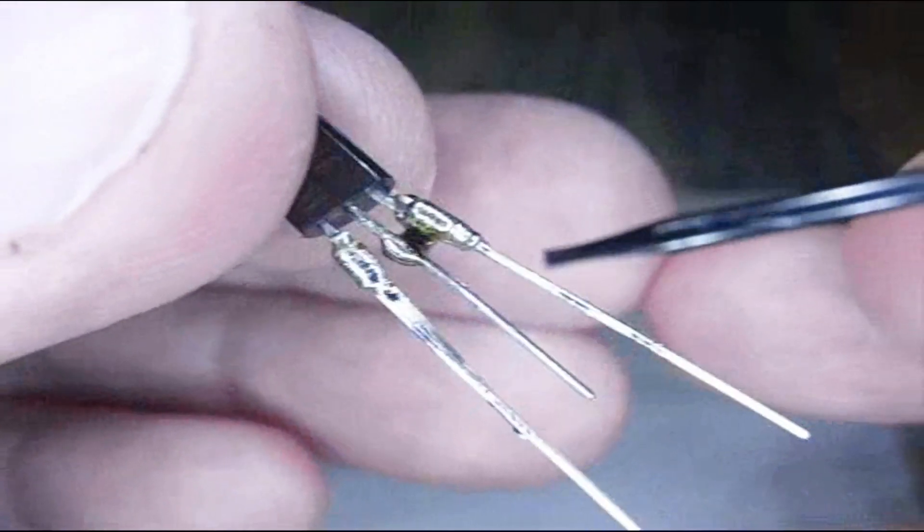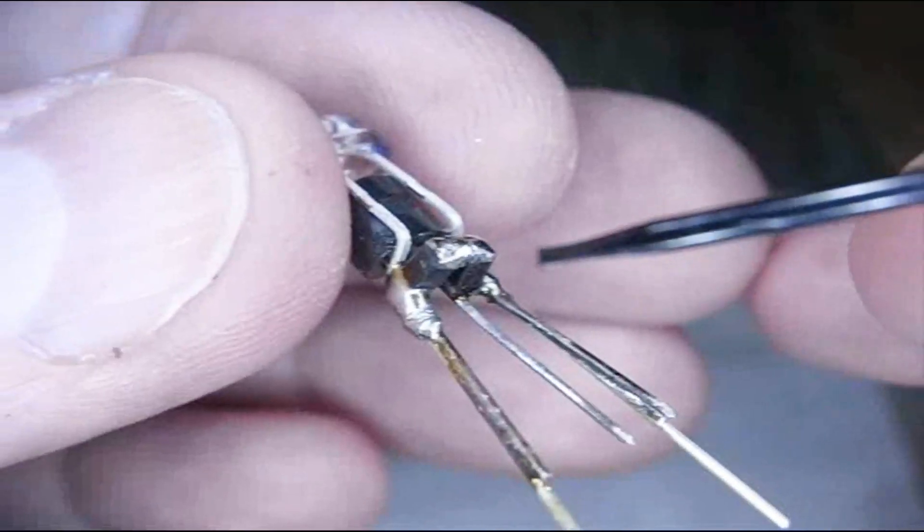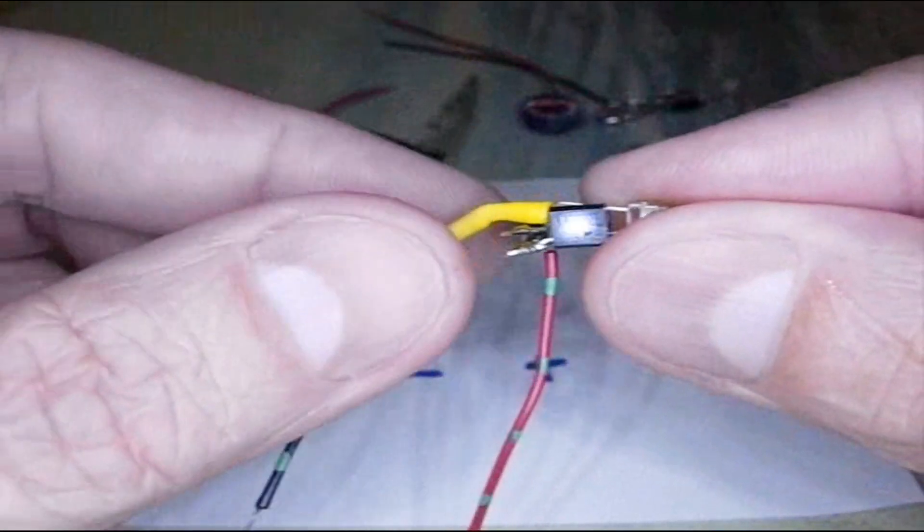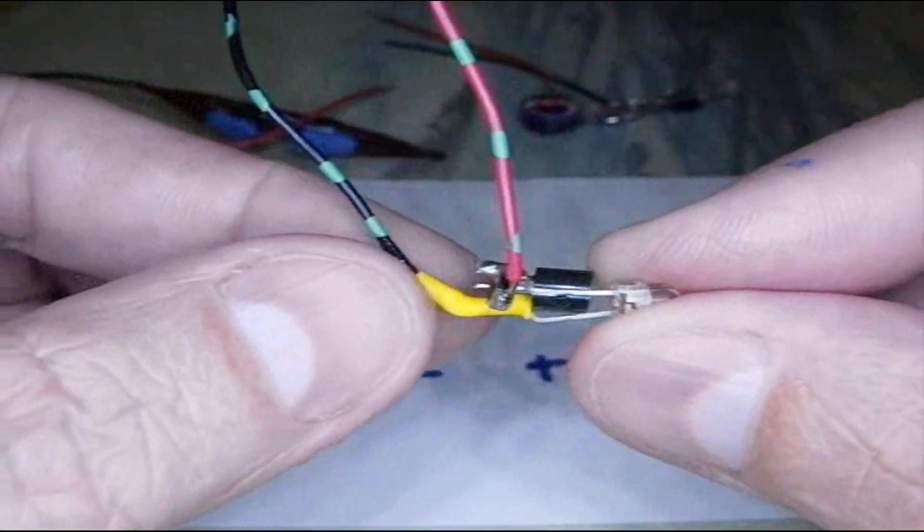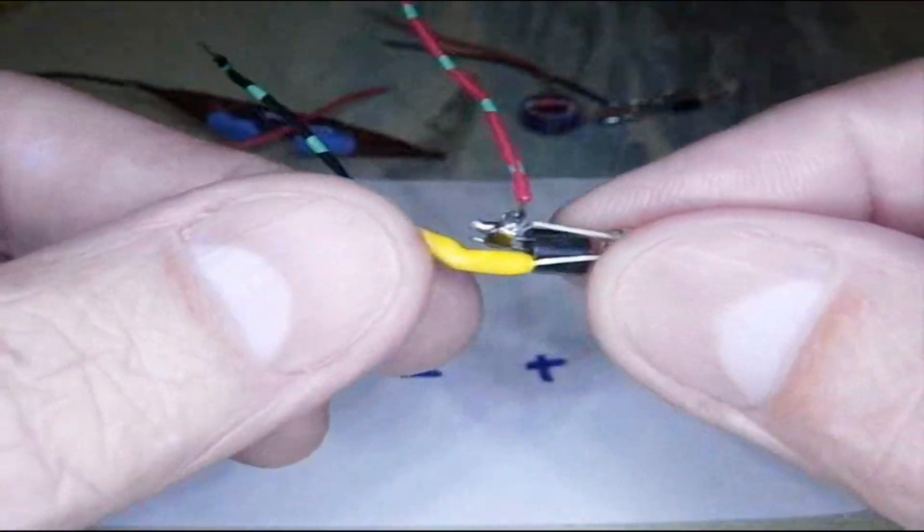So if all goes well, it will light up when we do that. So here we are with our leads attached. I put some shrink wrap on this one because I was worried it might touch the center contact. And there's our inductors in place.